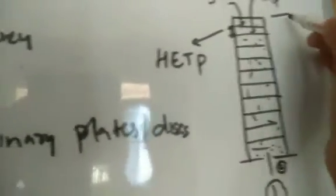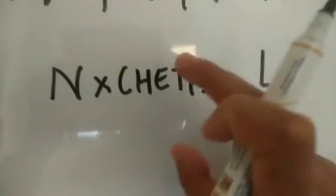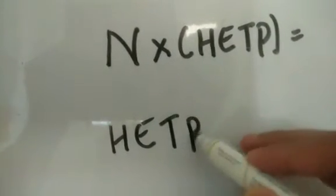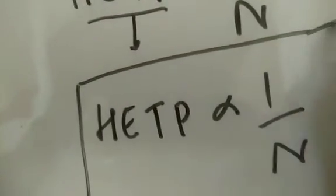The total length of the column is N multiplied by HETP. So the number of vertical plates N equals the total column length divided by HETP. Or we can say HETP equals L divided by N, where L is the length of the column. If N is more, that means HETP is less — they are inversely related, since the column length is fixed.